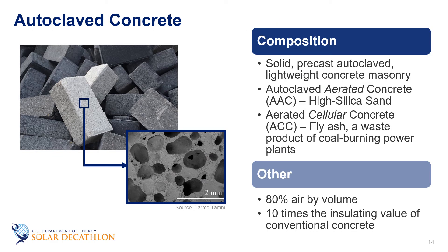In the United States, two varieties of solid pre-cast autoclaved concrete masonry are now available: autoclaved aerated concrete (AAC) and autoclaved cellular concrete (ACC). This material contains about 80 percent air by volume and has been commonly used in Europe since the late 1940s. Autoclaved concrete has 10 times the insulating value of conventional concrete. The blocks are large, light, and easily sawed, nailed, and shaped with ordinary tools, though the material absorbs water readily and requires protection from moisture. Pre-cast ACC uses fly ash from coal-fired power plants instead of high silica sand, which distinguishes it from AAC.